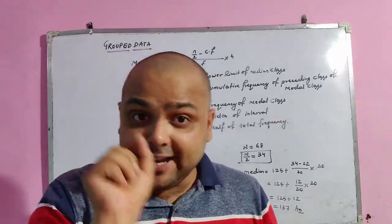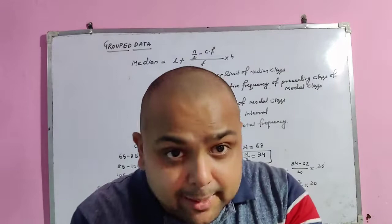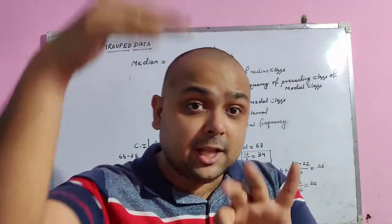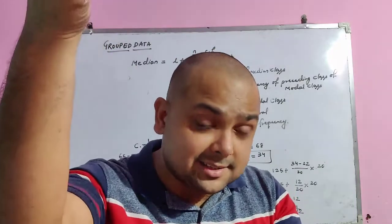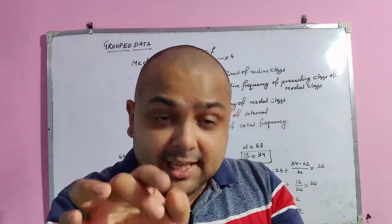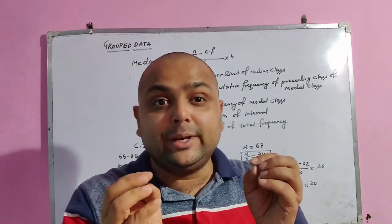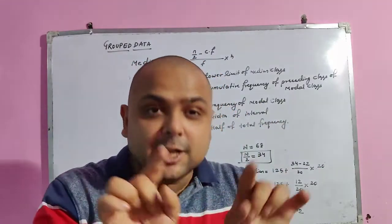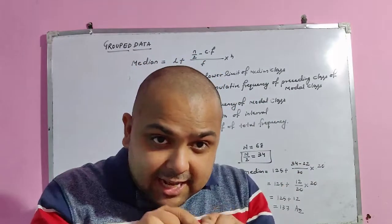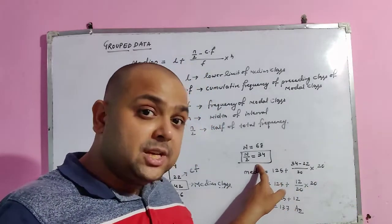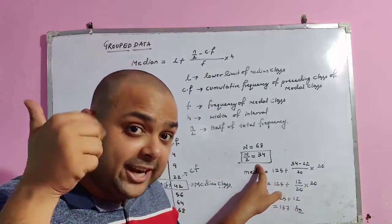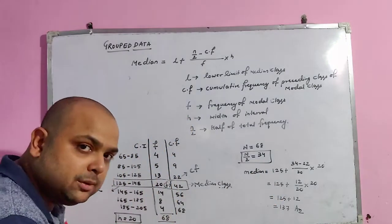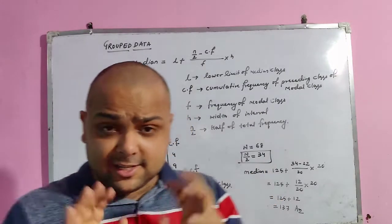The median is 137, and the median class is 125–145. Since 137 lies within this interval, our answer is verified. Always remember: l is the lower limit of the median class; cf is from the preceding class; f is the frequency of the median class; h is the width. To find the median class, take the cf that is greater than and nearest to n/2.